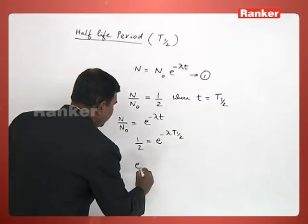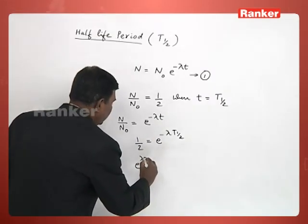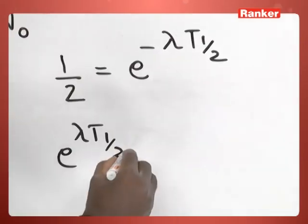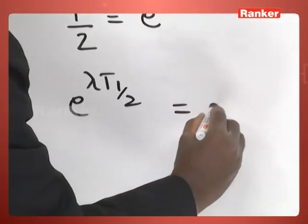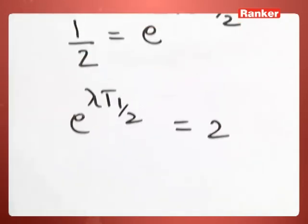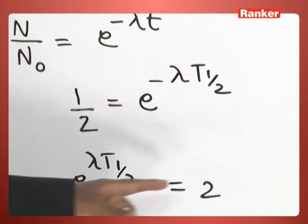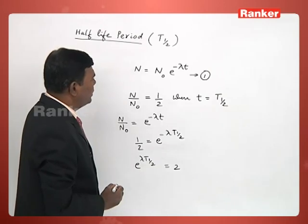From that, if you can write this further, e power lambda t half is equal to 2. We made this as plus and this will become reciprocal, that is 2. That is how we got that expression.